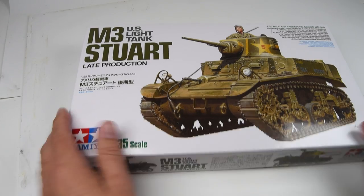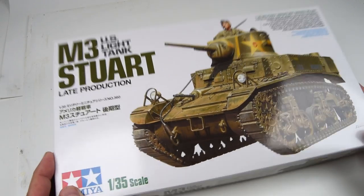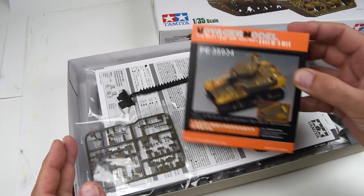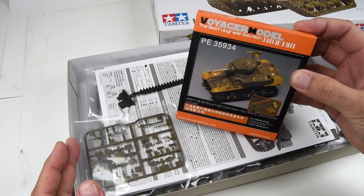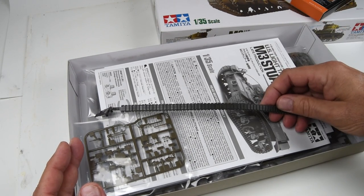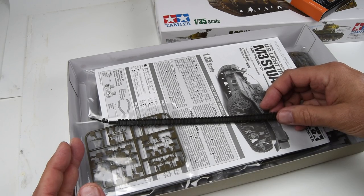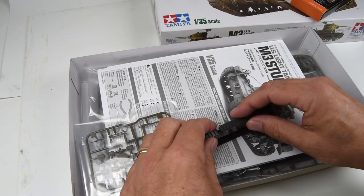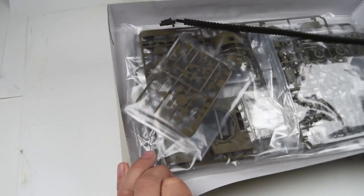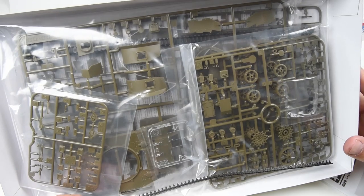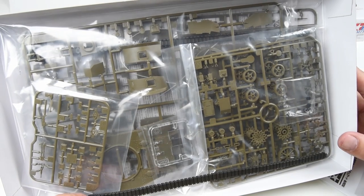Well here we go. We're going to start with the base kit of the Tamiya M3 Stuart. It's a great little kit, obviously just a weekend build, but of course I'm going to complicate it just a little bit with some Photo Etch from Voyager. And I think I might try to use these rubber band tracks. We'll see how that goes. We've got that very comforting and familiar Tamiya green plastic. That's always nice to take a look at.